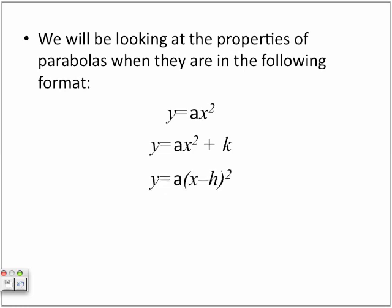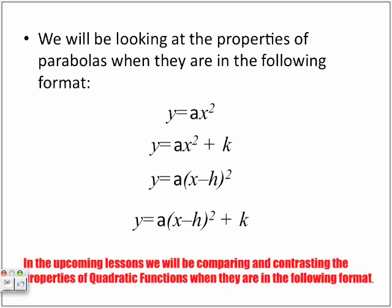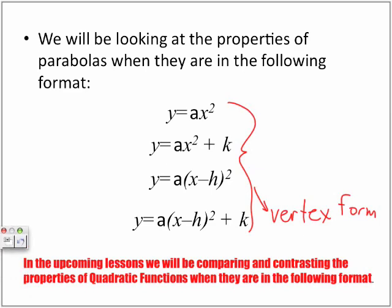Y is equal to a(x minus h) squared. And lastly, y is equal to a(x minus h) squared plus k. And remember that this is pretty much what we call the vertex form. In fact, all of these, to some extent, represent some kind of a vertex form. So in the upcoming lessons, we will be comparing and contrasting the properties of quadratic functions when they are in the following formats.